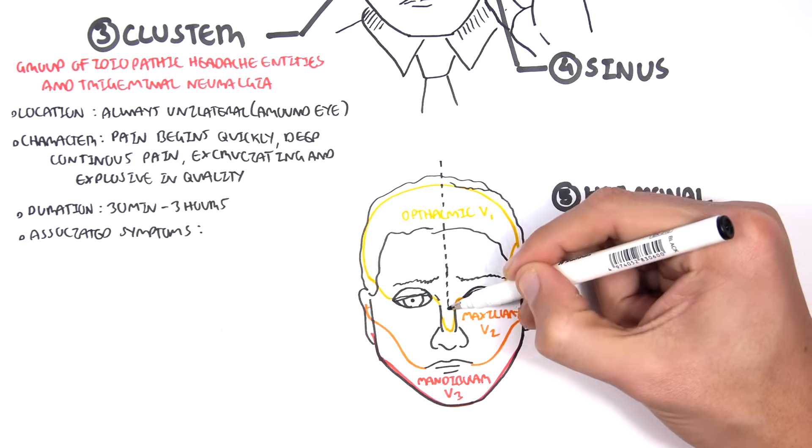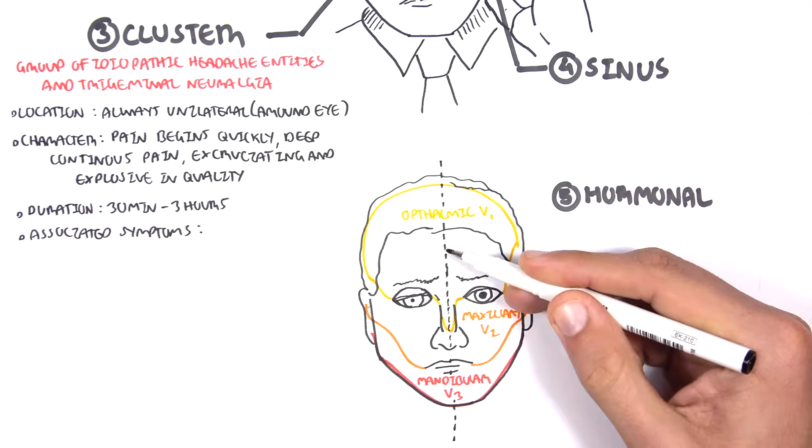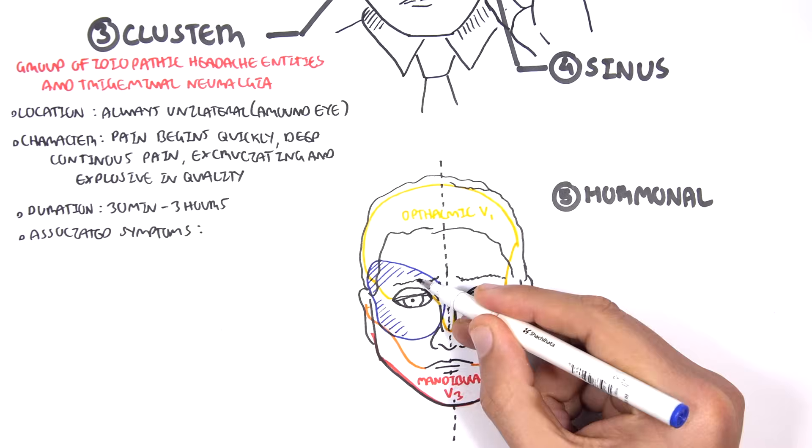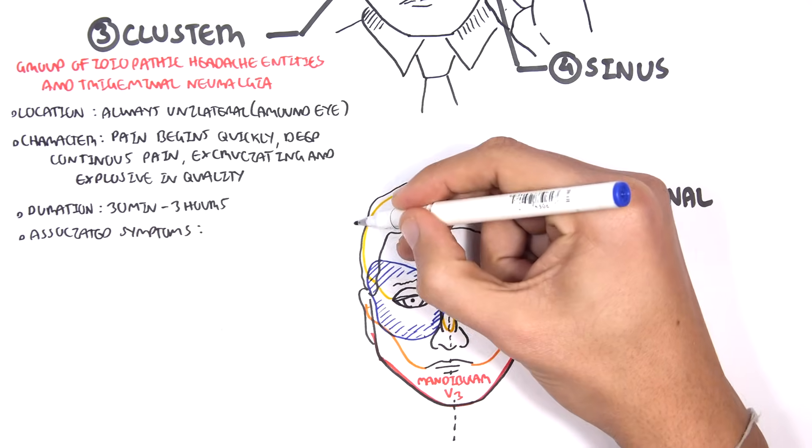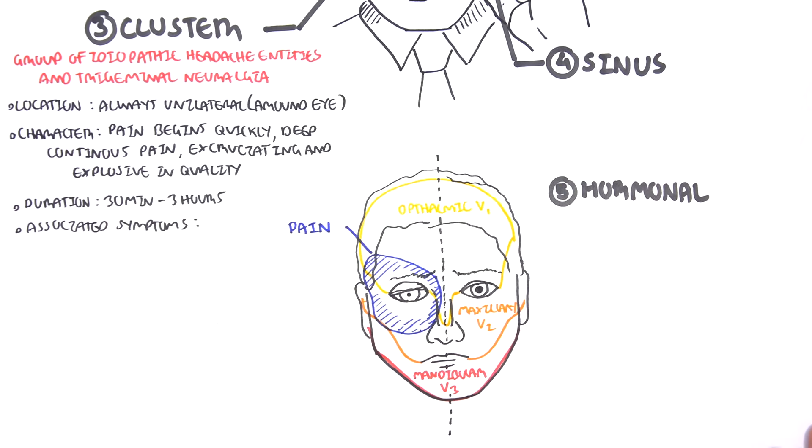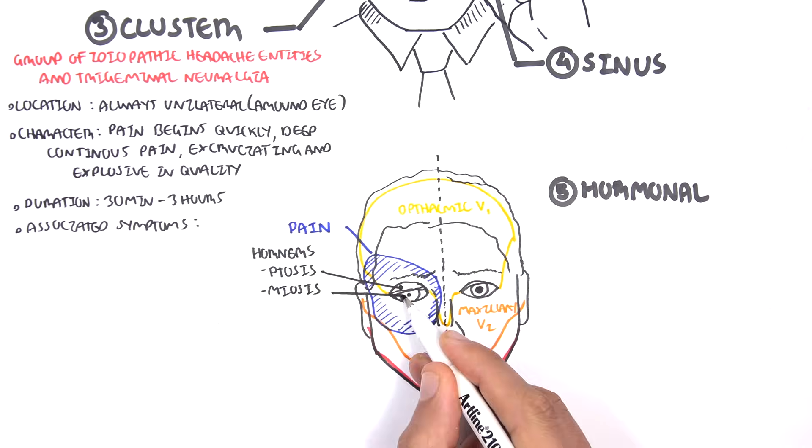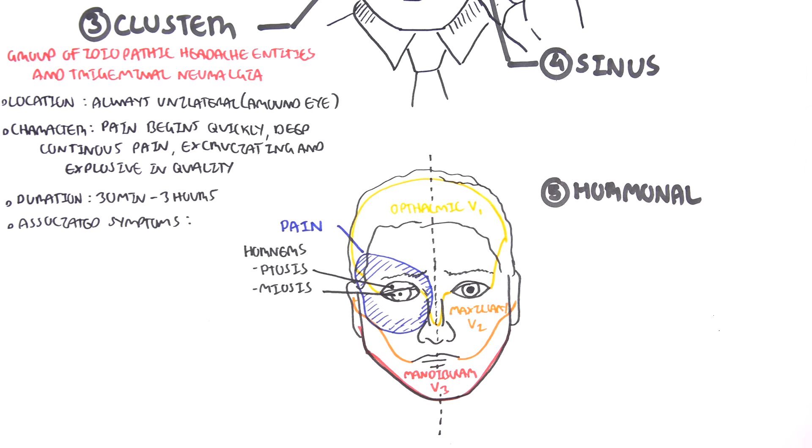In cluster headache, you have pain in this area in blue here around the eye. The associated symptoms include Horner's syndrome, which you have ptosis and miosis. Ptosis is drooping of the eyelid and miosis is the constriction, so you're unable to dilate your pupils.